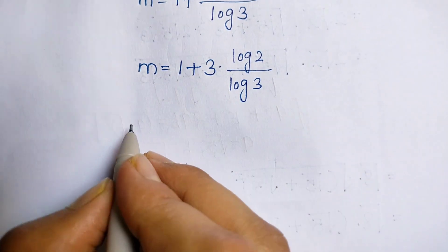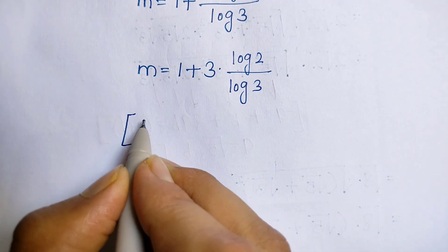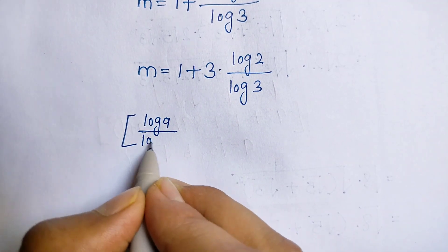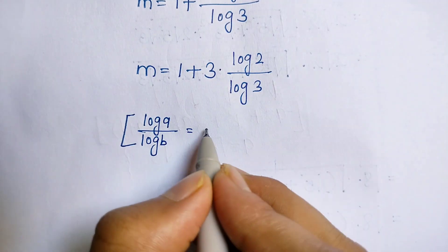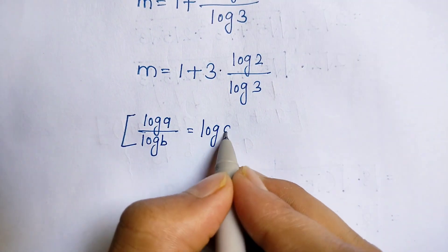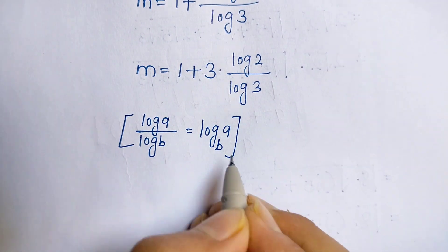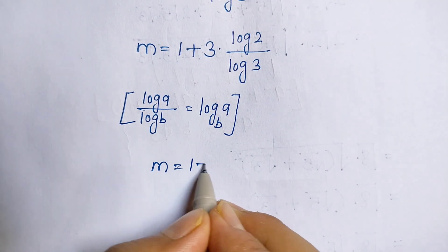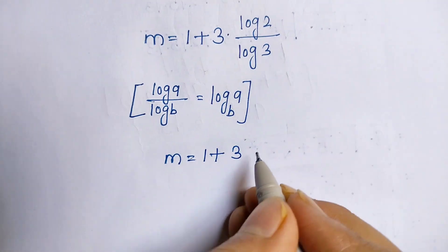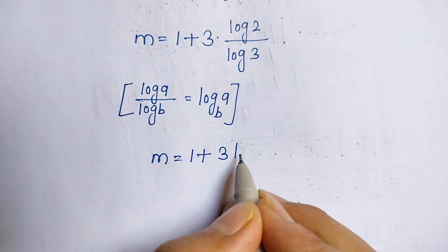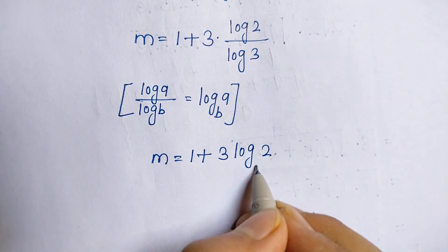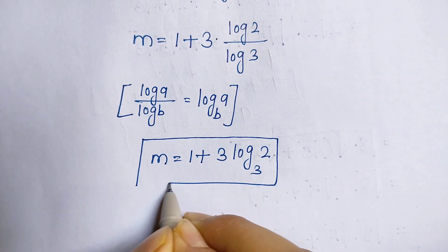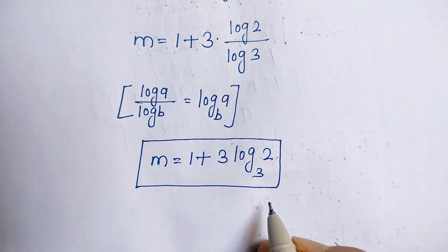We know the change of base rule of log: log a divided by log b is equal to log a base b. Applying this rule, log 2 divided by log 3 becomes log 2 base 3. Therefore, our final answer is m is equal to 1 plus 3 log 2 base 3.